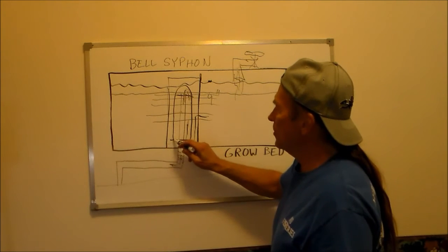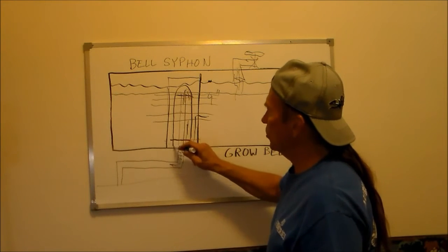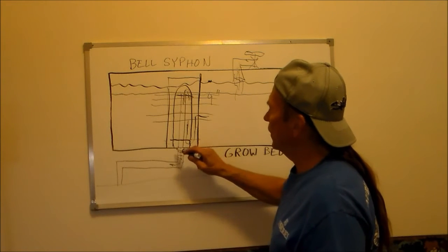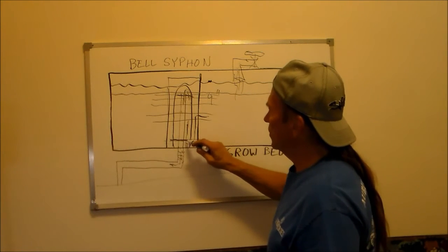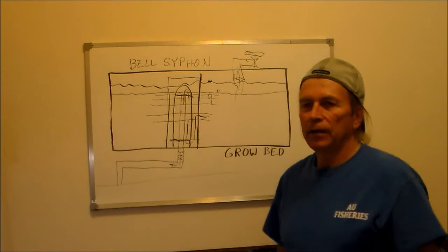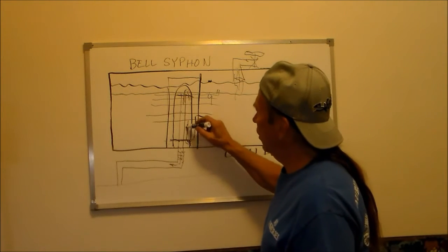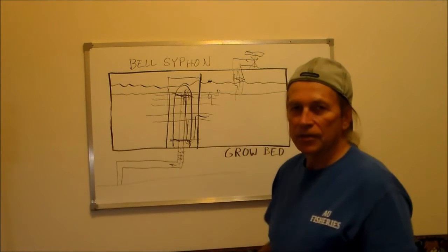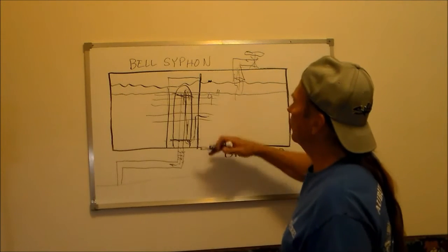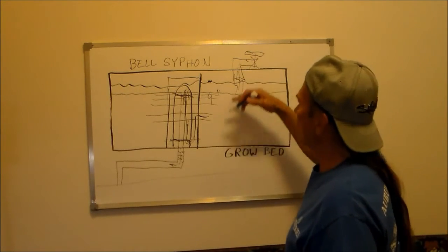As it drops down below the bottom of this bell, and this usually has some spacers holding it up, as it gets down to this bottom area here, it will suck some air in, so it will make a gulp of air, and that will break the siphon. Once the siphon breaks, it starts all over again.